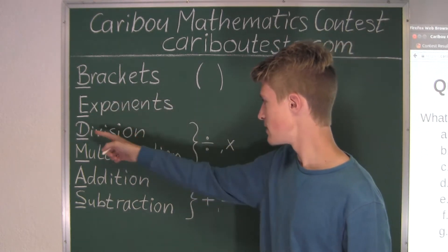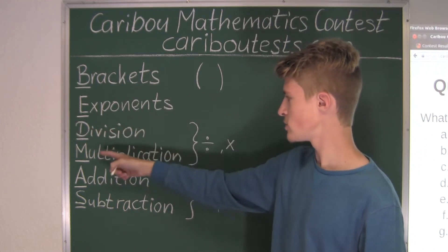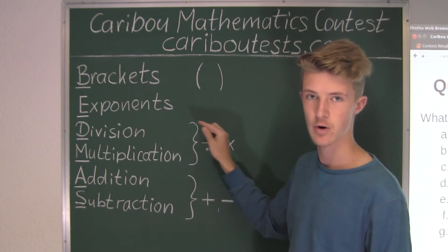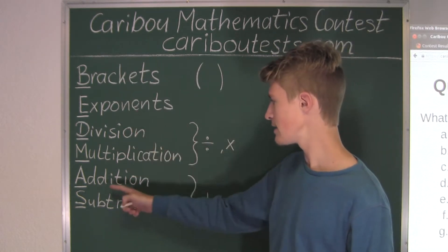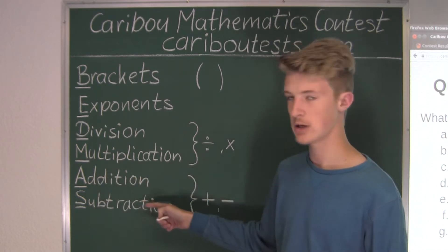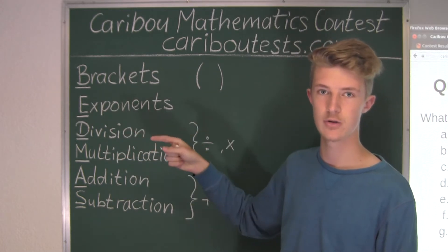Then next, we have division, and then we also have multiplication. So, for division and multiplication, you would just do them as you see them from left to right in an equation or an expression. And then finally, lastly, what takes priority is addition and subtraction. And again, just like these two, you would just go from left to right and do them as you see them.